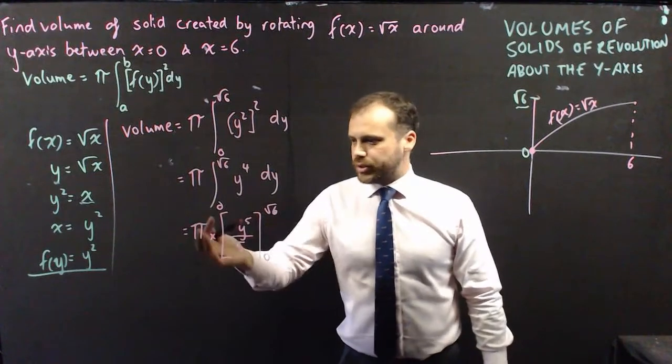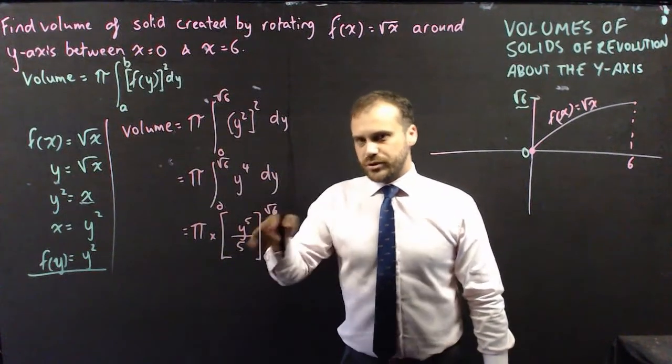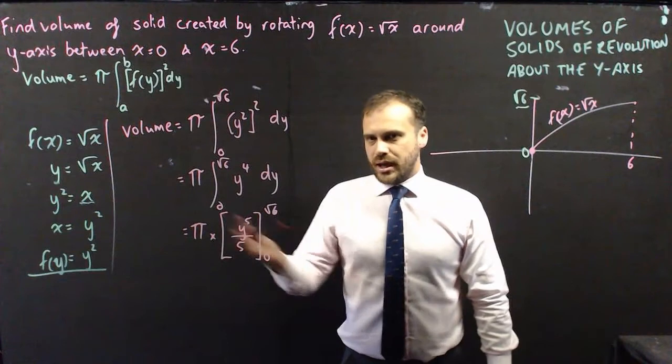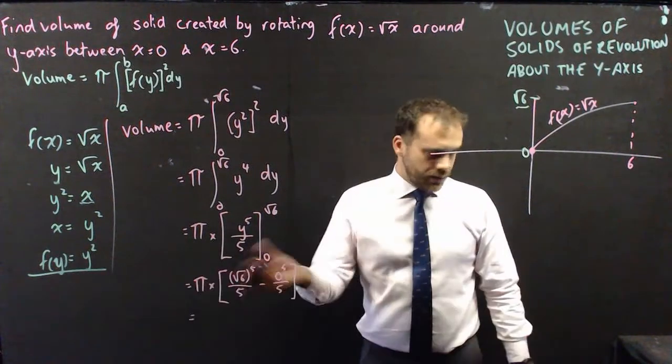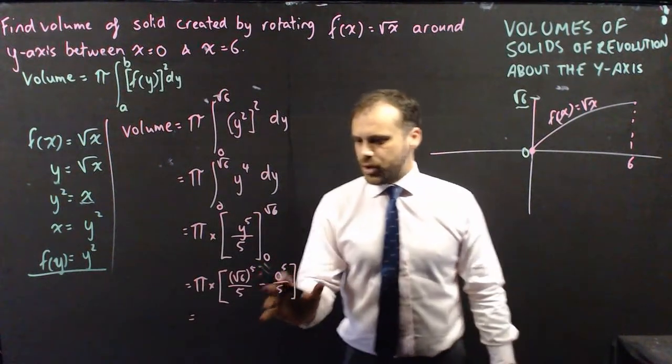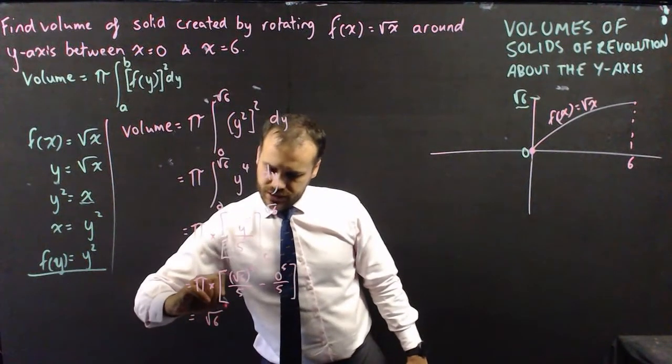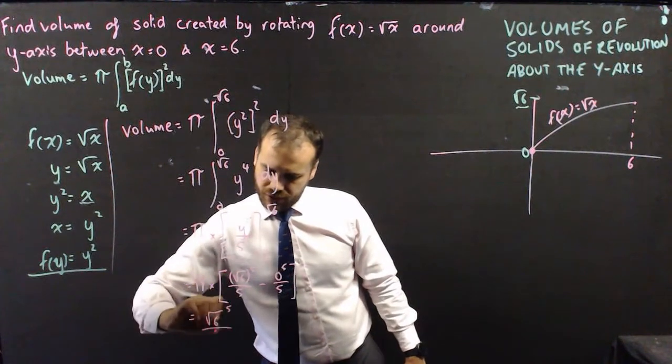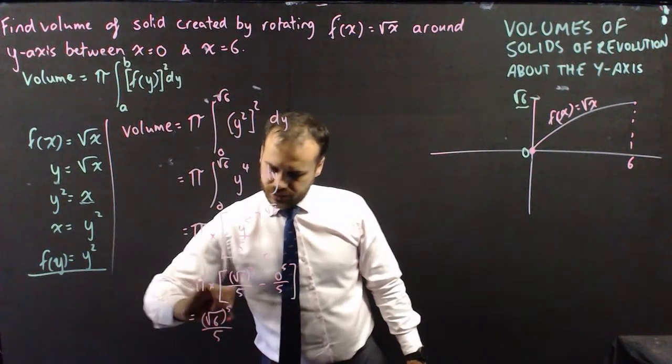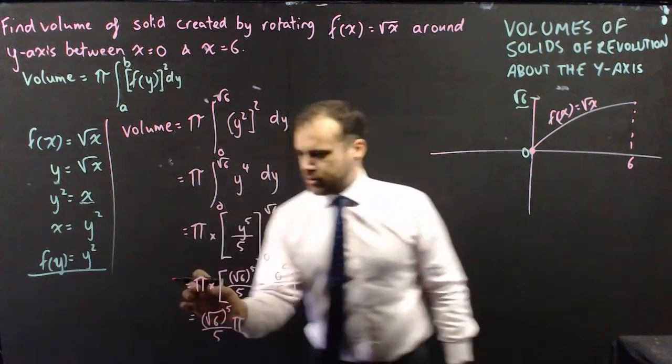From here, it's all grunt work. It's pi times, we sub in root 6, we sub in 0, and then we multiply that by pi. So we're pretty much done here. This minus 0 to the 5 over 5, that's just 0. So we're left with root 6 to the 5 over 5, times that pi.